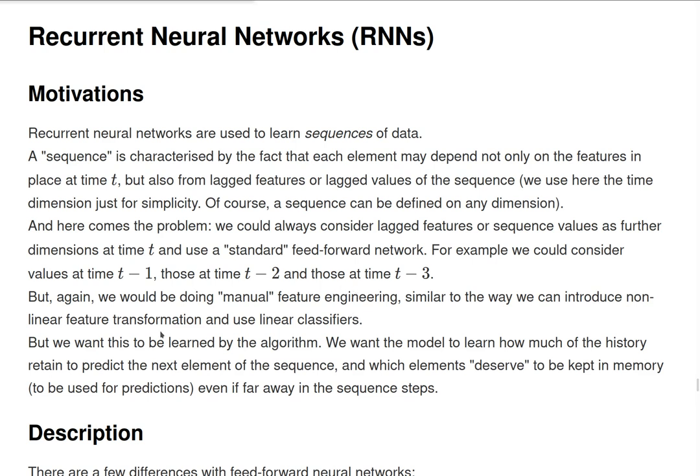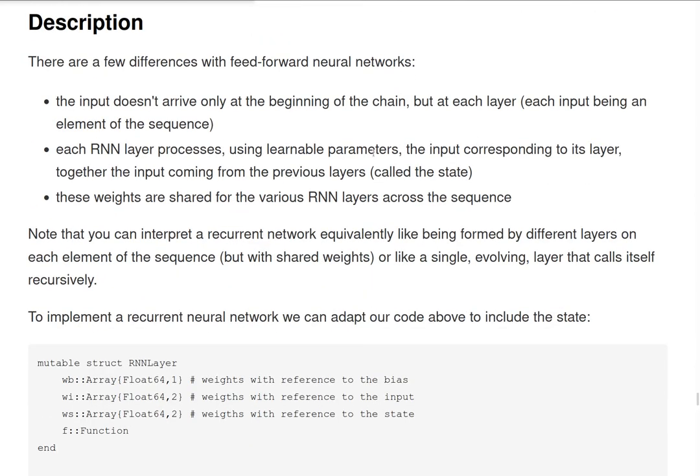But we don't want to do this. We want the algorithm to learn this feature transformation. We want the model to learn how much of this history is important to retain to predict the next element of the sequence, and instead which elements maybe have local importance but don't longer influence the sequence after some time steps. So this is why we are using some specialized kind of neural networks that take the name of recurrent neural networks.